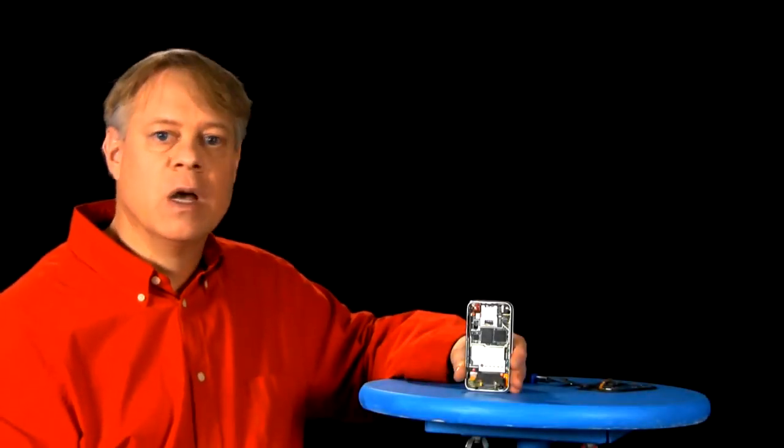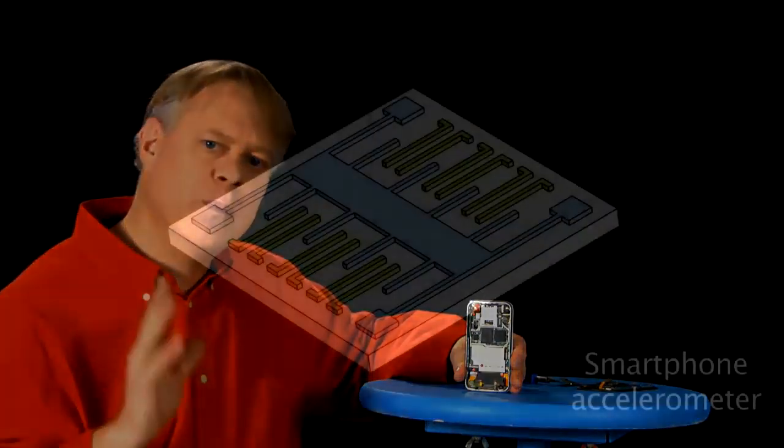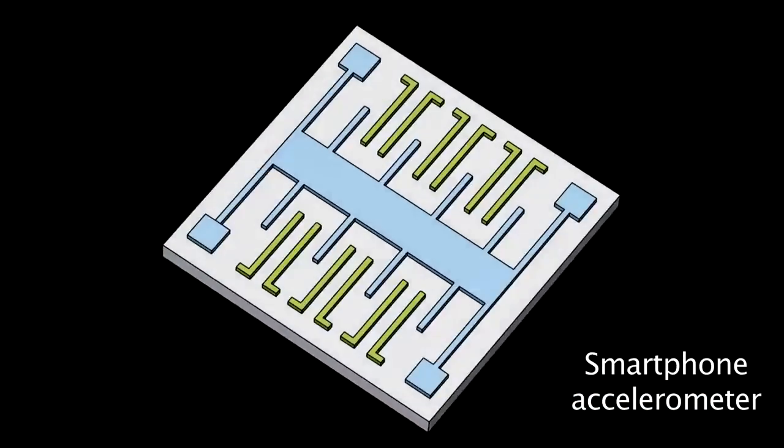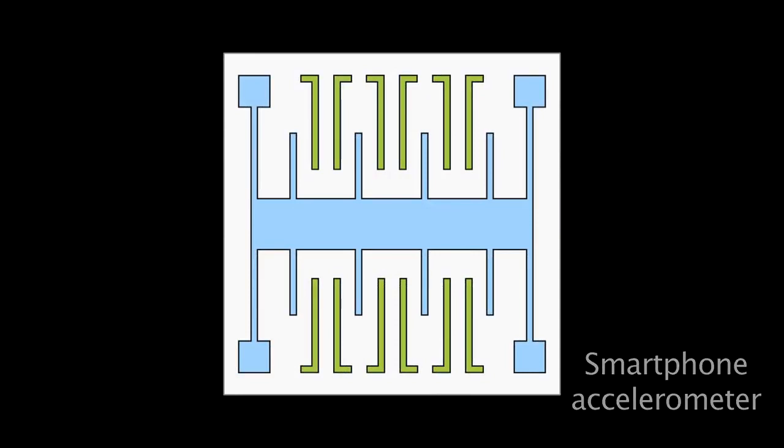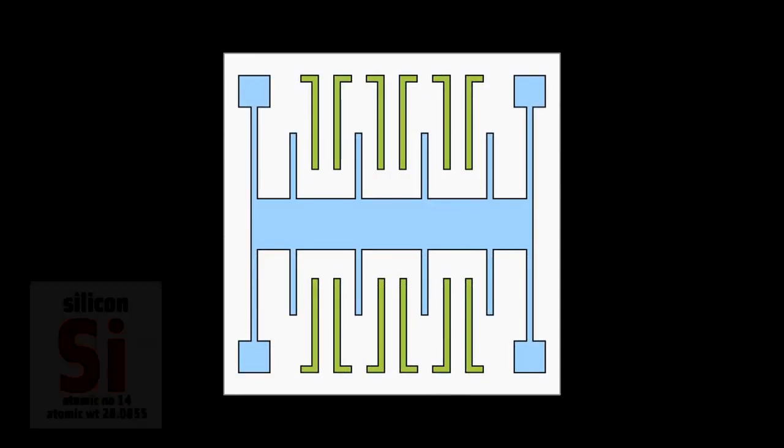So, how does this phone and this chip measure changes in gravity? Well, more complex than the simple ball and spring model, it has the same fundamental elements. Inside the chip, engineers have created a tiny accelerometer out of silicon.